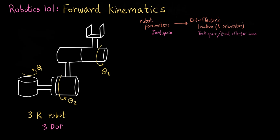Here I have marked out the rotation angles. Theta1 is the rotation about this axis, theta2 is the rotation about this axis, and theta3 is the rotation about this axis. Now since we are doing forward kinematics, what would be provided to us would be the exact values of theta1, theta2, and theta3, and we need to figure out where the end effector would be based on those specific values of theta.